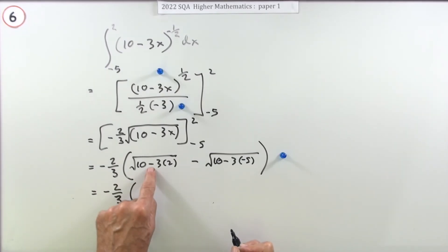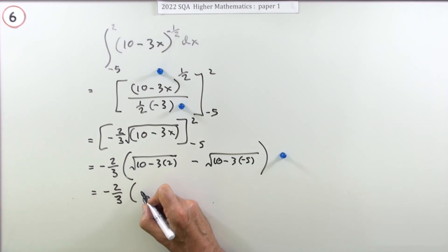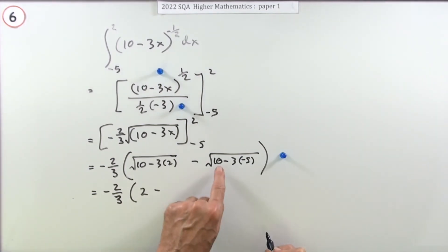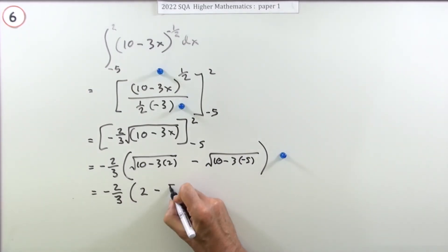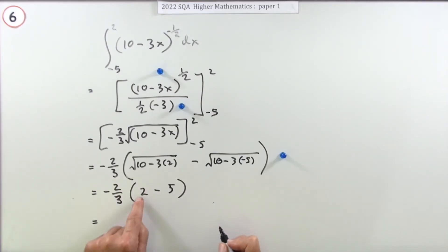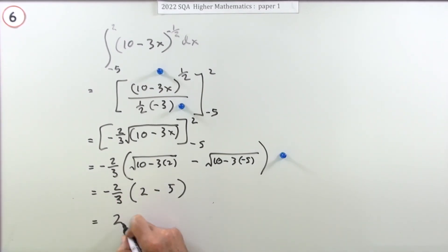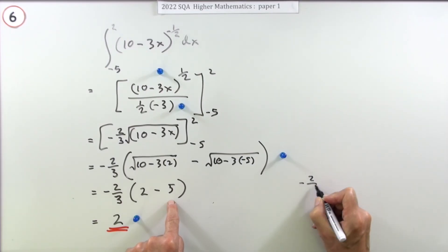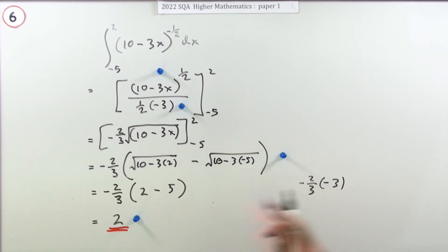10 minus 6 is 4, so that's root 4, which is 2. 10 plus 15 is 25, and square root of 25 is 5. So we have negative two thirds times (2 minus 5), which is negative two thirds times negative 3. The 3s cancel and the negatives cancel, leaving the final answer of 2.